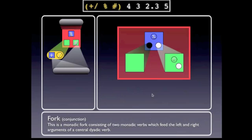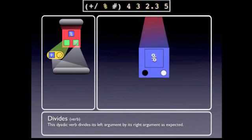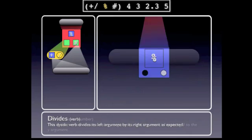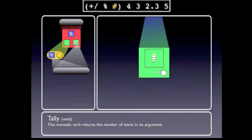So in this case, we've got a monadic fork and it's working on its argument, which is this list. We've got a dyadic verb in the center, the divides verb, and it's taking four, which is the number of items in this list. So that's what this verb does, is it counts the number of items in its argument.